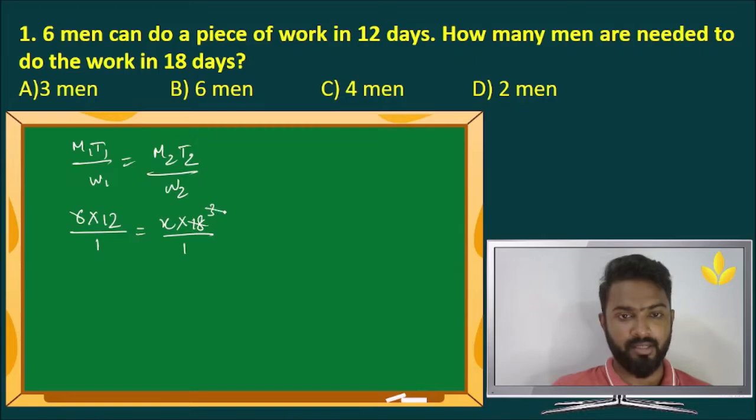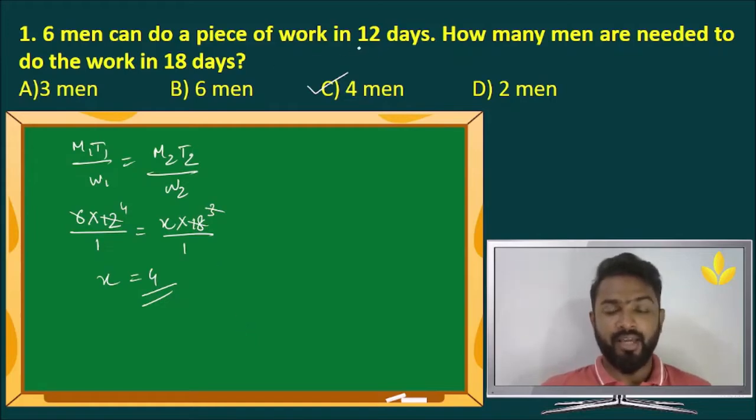So 6, 3s are 18, 3, 4s are 12, so x equals 4. That is how simple this method makes this question. If they exceed the number of days to do the work, then obviously we can use less number of men, that is the whole point. If they had decreased the number of days to finish the work, then the number of men would have increased.